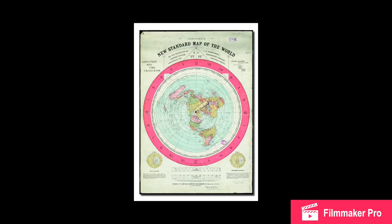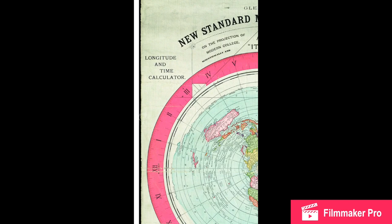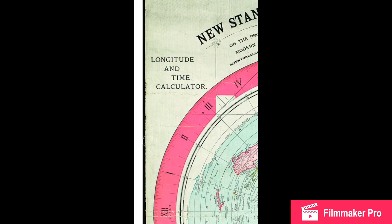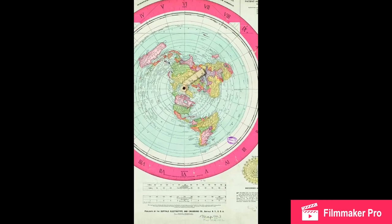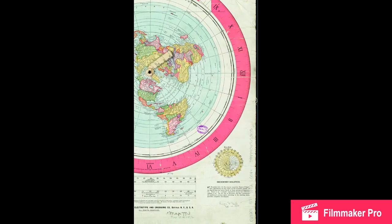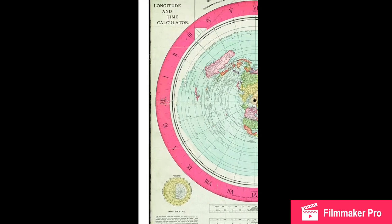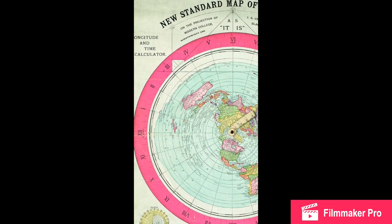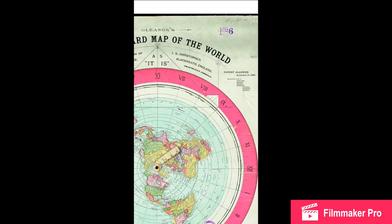Okay, here we have Gleason's map — The New Standard Map of the World. Let's zoom in. On the left it says 'Longitude and Time Calculator,' and as you can see it has a 24-hour clock on there, going 1 through 12 then 1 through 12 around the other way.